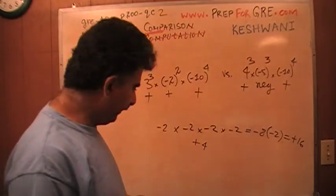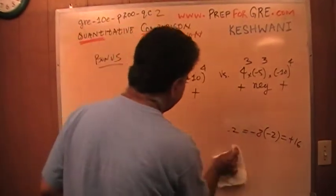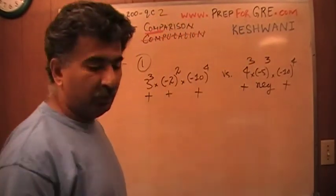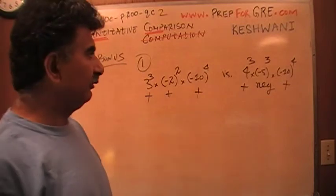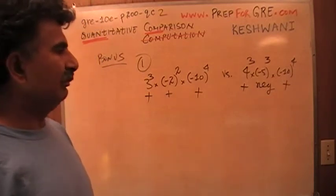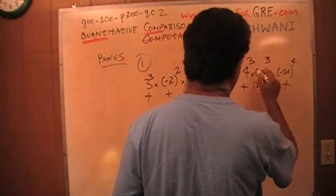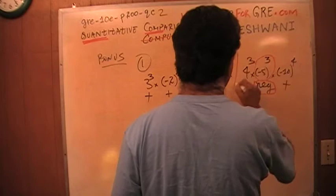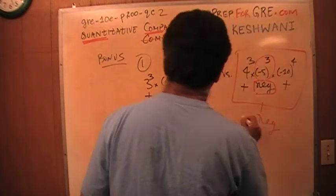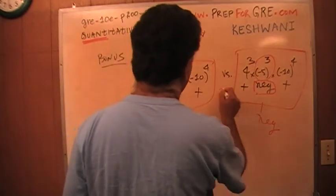The quantity on the other side, column B, let me erase all this here. I don't actually have to figure out what they are actual numbers. That will be an enormous waste of time, colossal waste of time. I don't have to figure out actually what the numbers are. All I have to realize here is that this is a negative quantity here and therefore this whole thing is negative. This whole thing is positive. Therefore the answer is A.